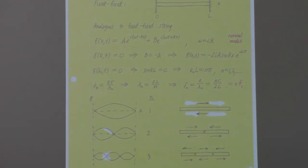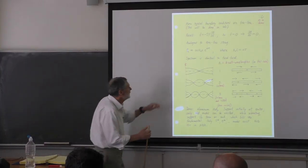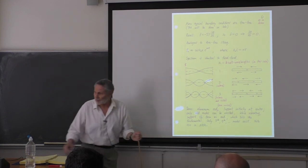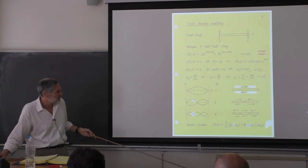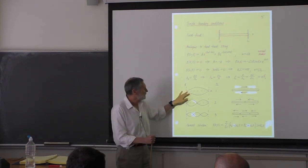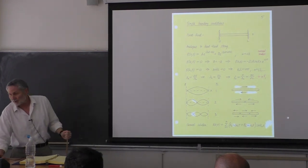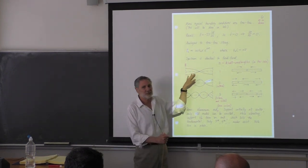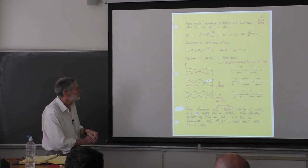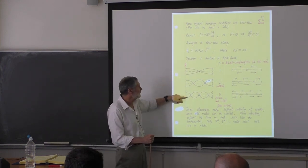We get these modes. For fixed-fixed, we have a half wavelength giving a frequency we can calculate. For free-free, we get the same frequency because we also have a half wavelength — the waveform is shifted, but the frequency spectrum is the same. All these modes are harmonics of the fundamental: twice the frequency, three times, et cetera.